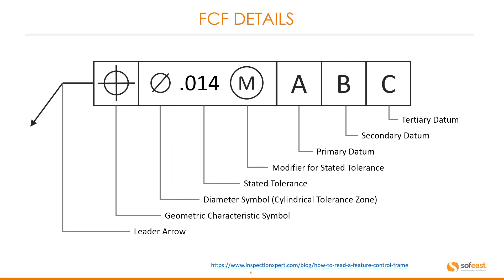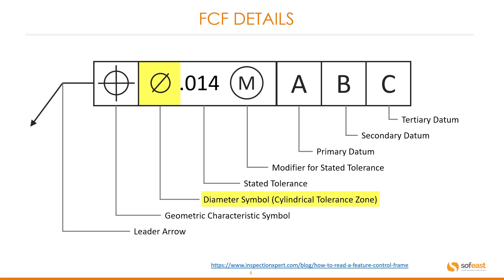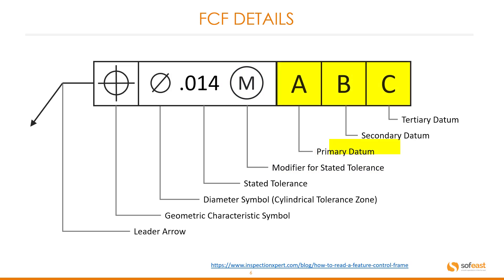Let's have a look at the feature control frame in more detail. Starting from the left we have the leader arrow, then the geometric characteristic tolerance, next is the diameter symbol. If the product is a cylindrical product we add the cylindrical tolerance zone. Then we have the stated tolerance, then the modifier for stated tolerance, then the datums — first we have a primary, then secondary and tertiary. This makes up the full feature control frame.